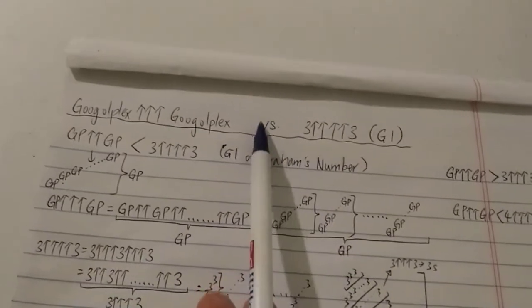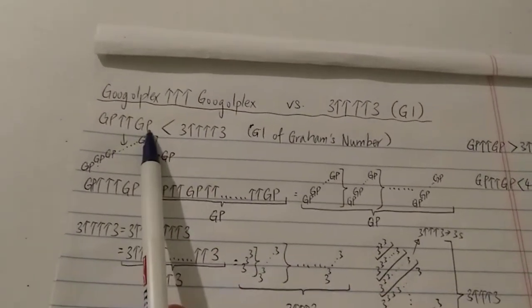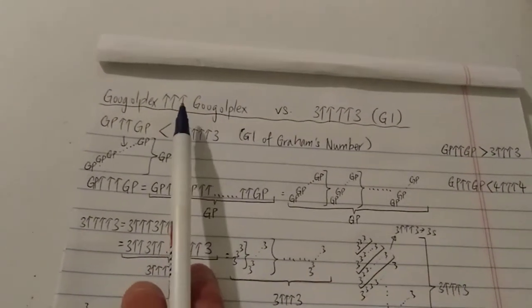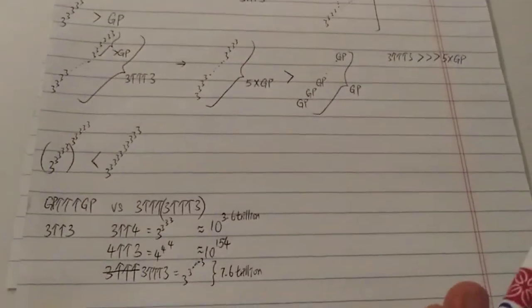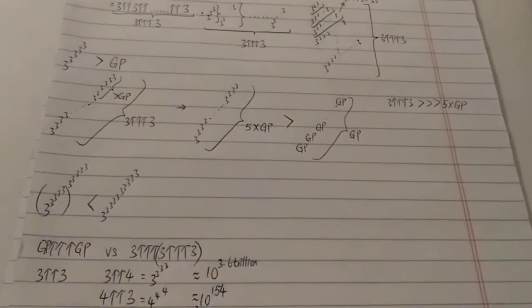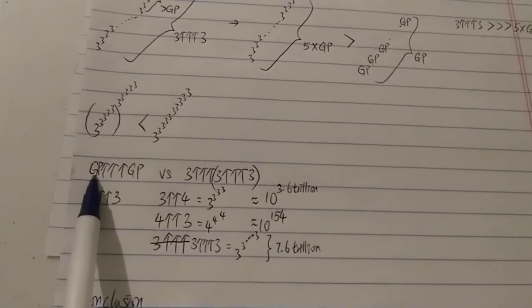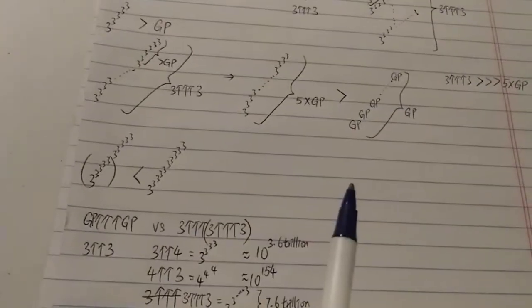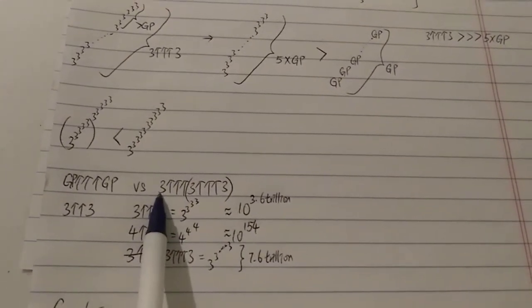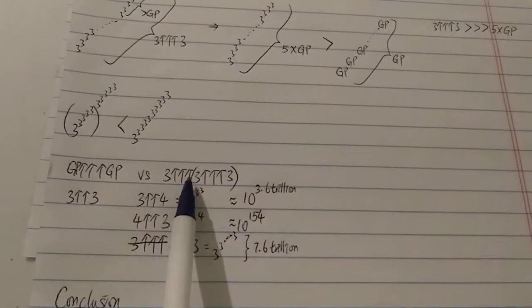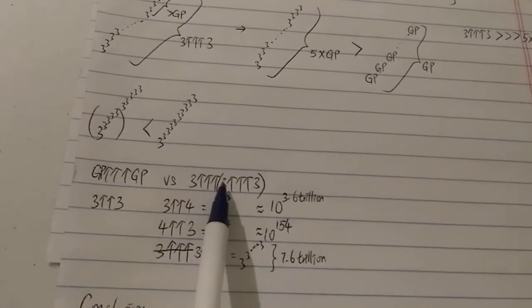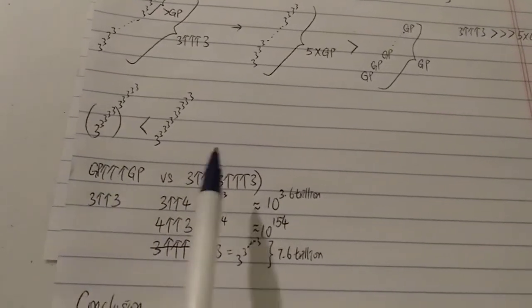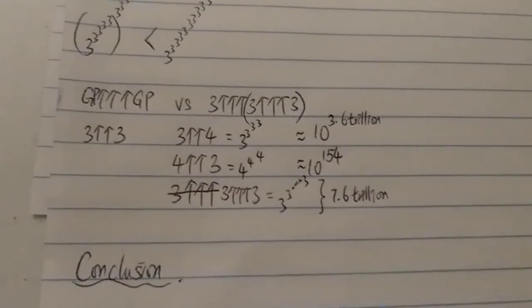Some of you might still think Googleplex double arrow Googleplex is bigger than G1, but it's not. In fact, G1 is even bigger than Googleplex three-arrows Googleplex. There's another quick way to show this, which I explained in my video called 'Power Tower Paradox.' Googleplex triple arrow Googleplex has three arrows, and G1 has four arrows — but you can break G1 down so that you're comparing three-arrows expressions on both sides: three triple-arrow (three triple-arrow three). This way it's easier to compare, since both sides now involve three arrows. The question becomes: which plays a bigger role in increasing a number's size — the front number or the end number?